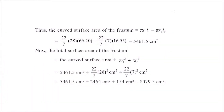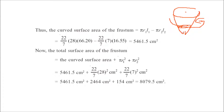Now the curved surface area. The curved surface area of the frustum is π r1 l1 (complete cone) minus π r2 l2 (smaller cone). We are only taking the curved part, not the flat bases. So the curved surface area = π × 28 × 66.20 − π × 7 × 16.55. That gives the curved surface area of the frustum.